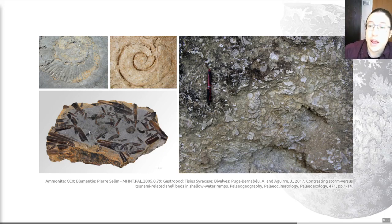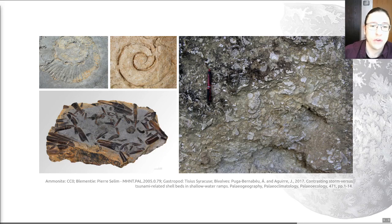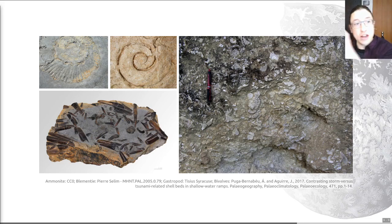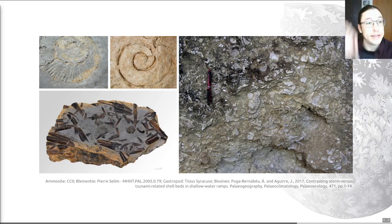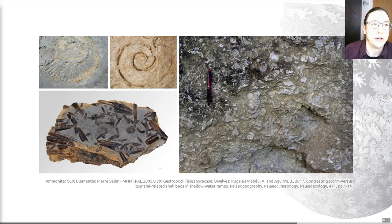Belemnites — you can see a nice example here on the bottom left. These creatures look a lot like bullets, and in addition to that, they're made of calcite. Sometimes when you break them in section you can see radially arranged calcite crystals. So no matter what angle you cut them at, if you've got radially arranged calcite crystals going around a central point, this may well be a belemnite. Obviously that only applies to rocks around the Mesozoic when these creatures were around — definitely not post-KPG extinction.